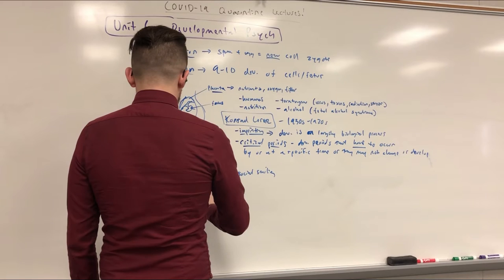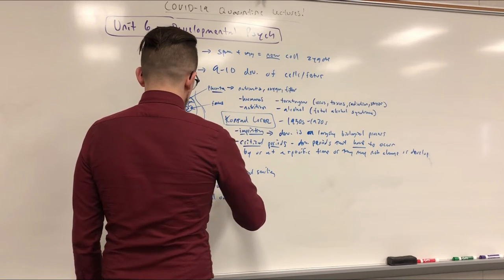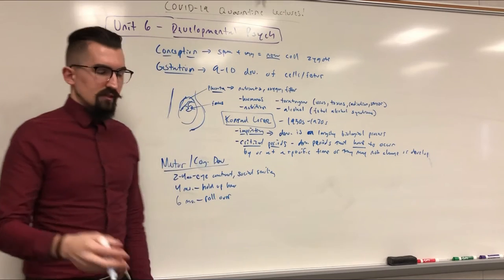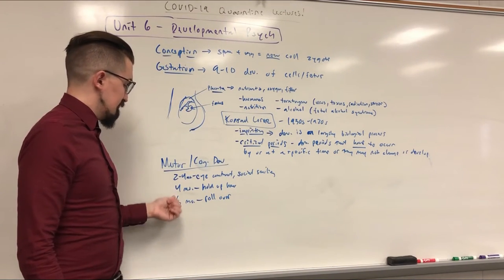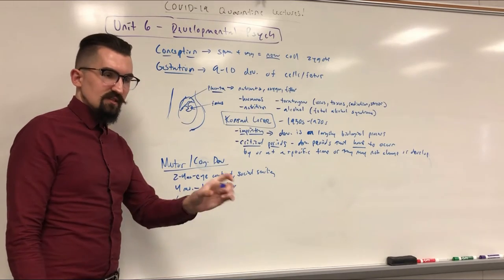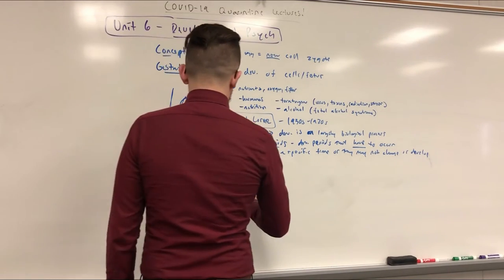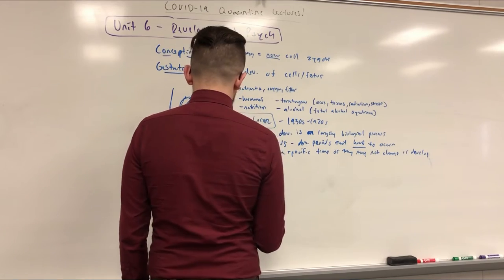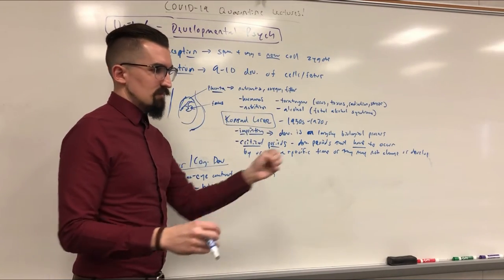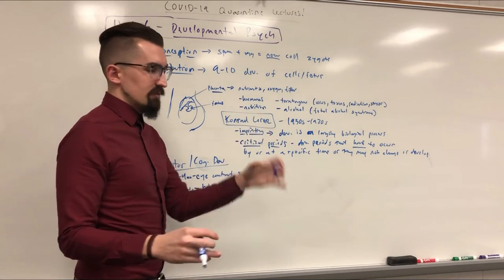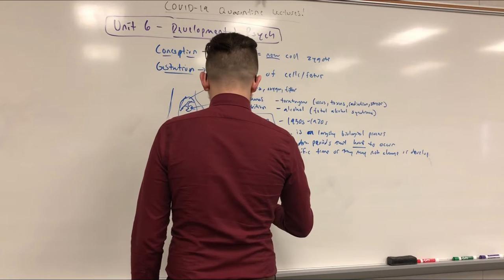By the six-month mark they should be able to roll over. And also at this point they should be able to move objects from one hand to the other — picking things up and doing hand exchanges — even if using all their fingers.